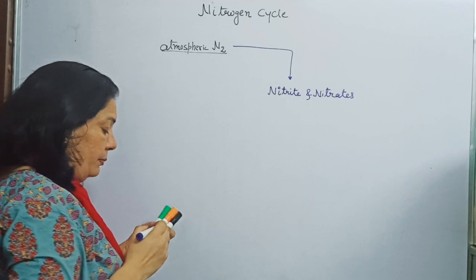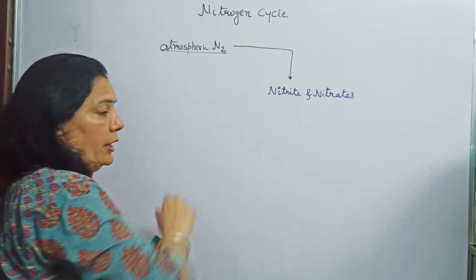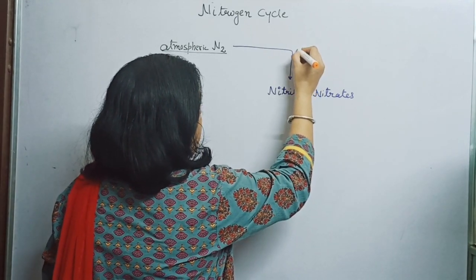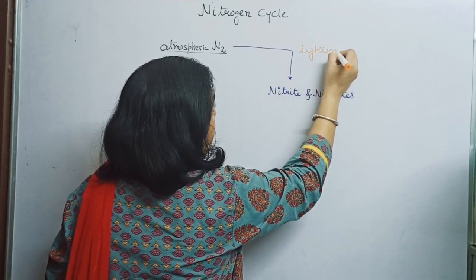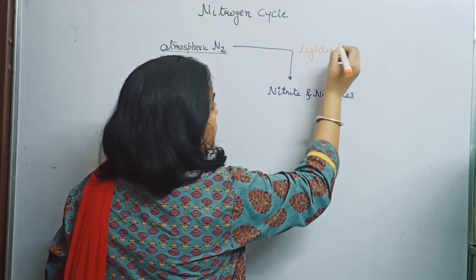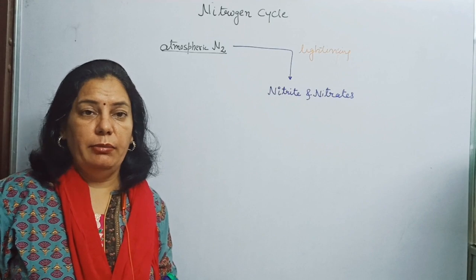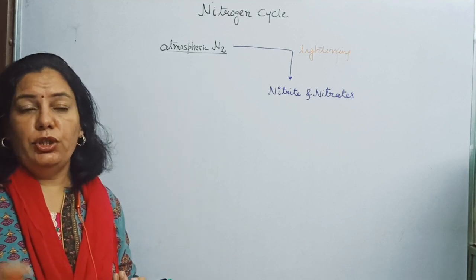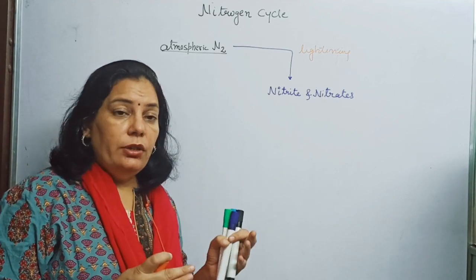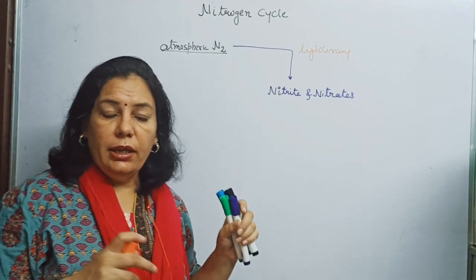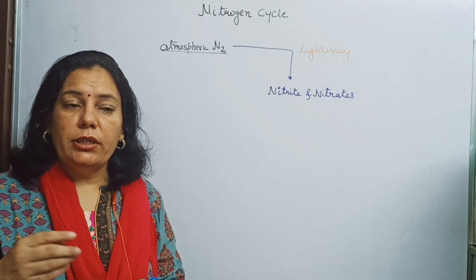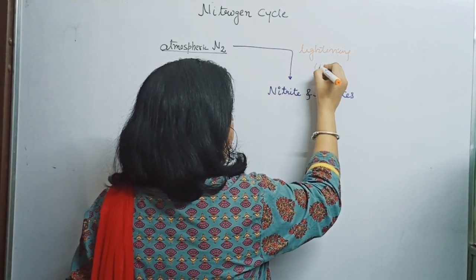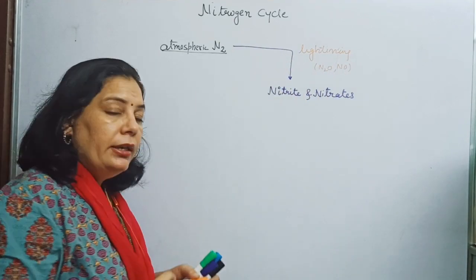This conversion can be carried out by two processes. The first process is a natural process called lightning. Lightning causes very high temperature during the rainy season. Due to the high temperature, the nitrogen present in the atmosphere reacts with oxygen. In this process, nitrous oxide and nitric oxide — various oxides of nitrogen — are formed, such as N2O and NO.